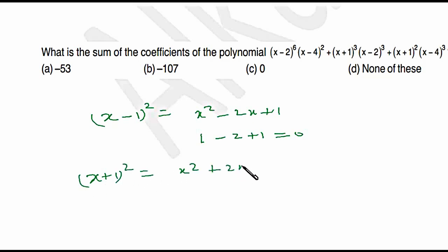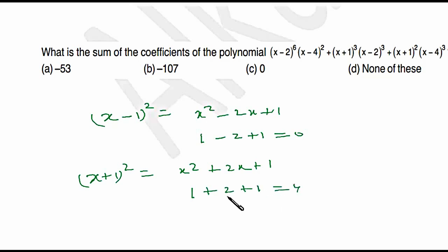For (x + 1)², the sum of coefficients is 1 + 2 + 1 = 4. So the sum of coefficients is 4 in this case and 0 in the previous case.